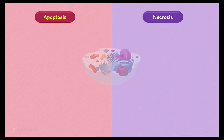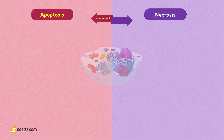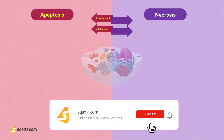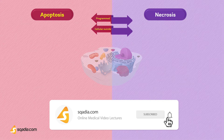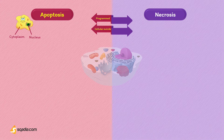Apoptosis is a programmed cell death, or some literature even call it a cellular suicide. It occurs through the shrinking of cytoplasm followed by the condensation of the nucleus. In this process, the cell itself takes part in its death.